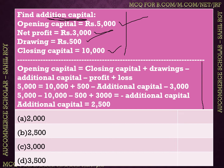I have given a solution here. The formula is: Opening capital = Closing capital + Drawings − Additional capital − Profit + Loss. When you put all these values in, your answer will come. Additional capital is Rs. 2,500. When I have solved this question, my answer is correct — it's Rs. 2,500.